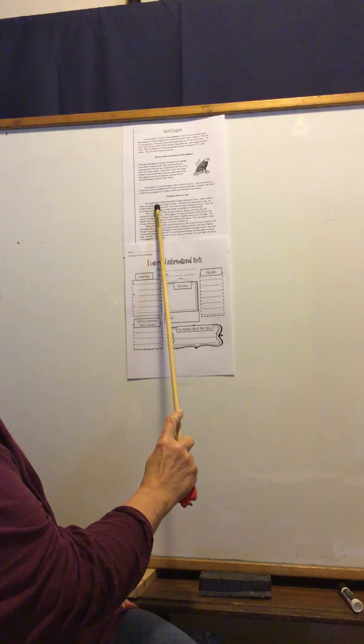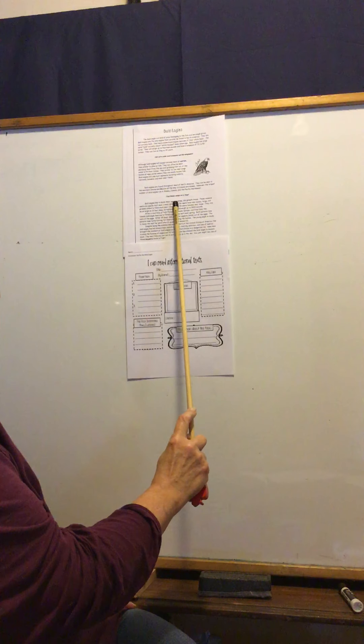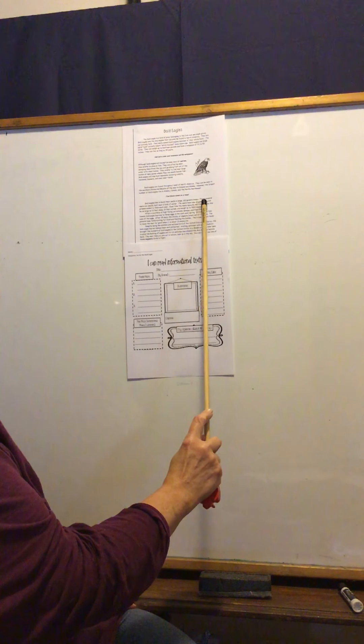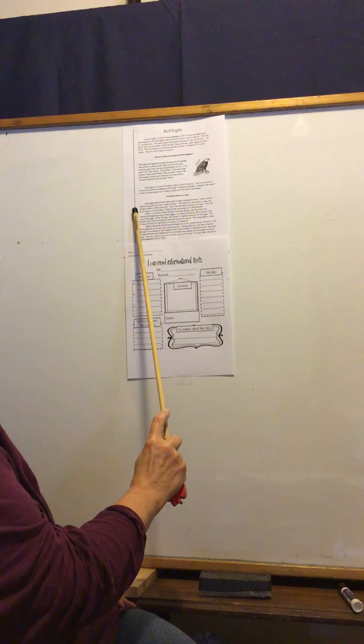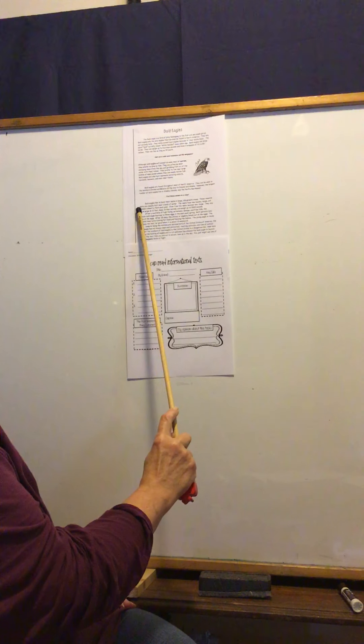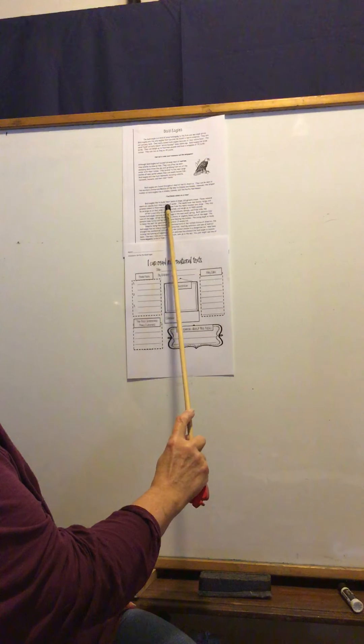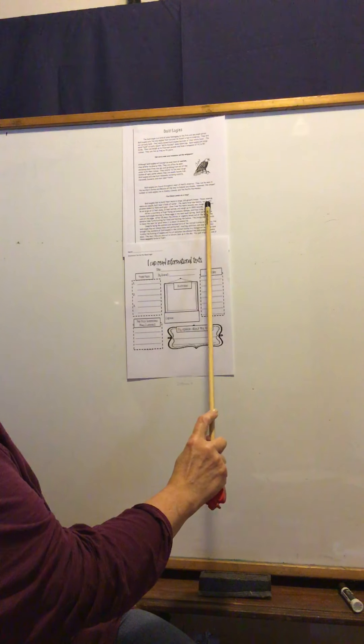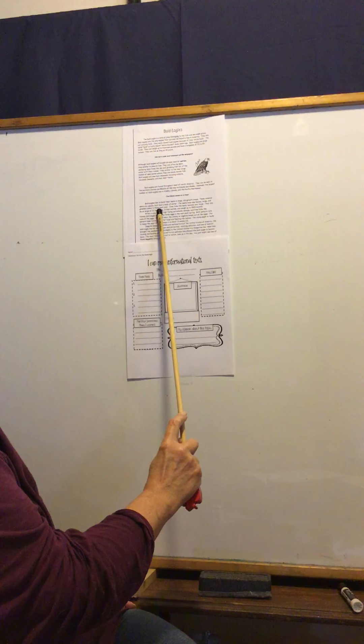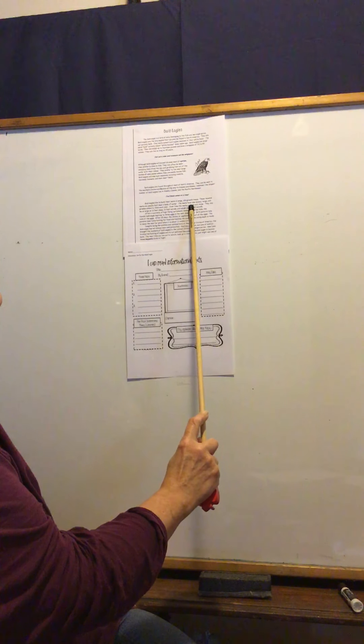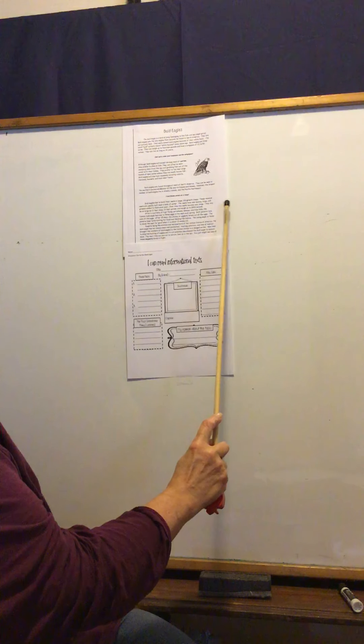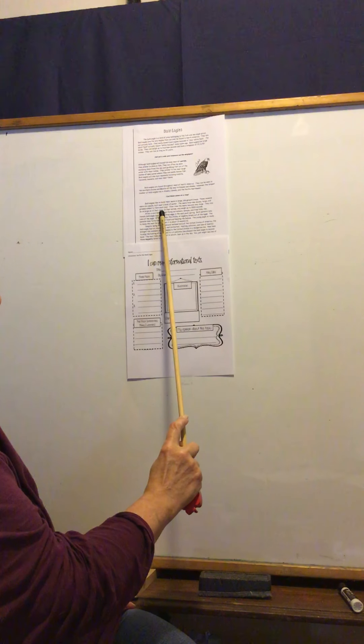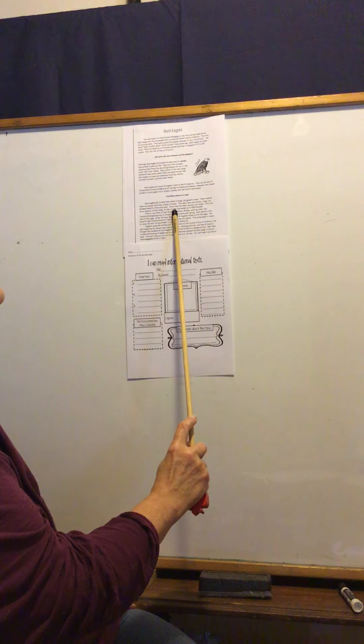Bald eagles like to build their nests in large old growth trees. These massive, huge nests are usually built near the body of water. The nests have new leaves, twigs, and grasses added to them each year. Over time, the nests become very large. They may be as large as 12 feet deep, 10 feet across.